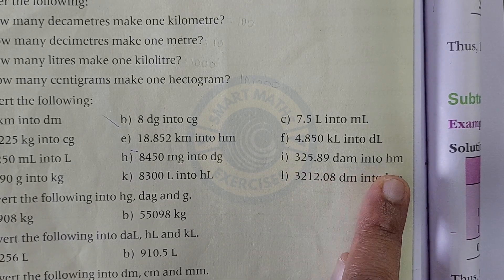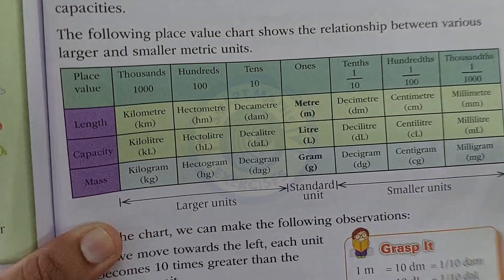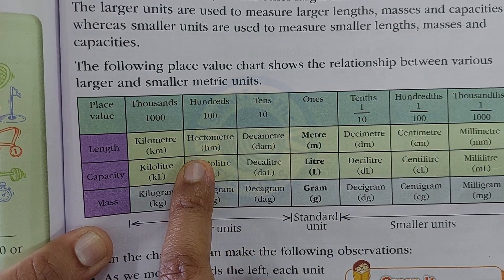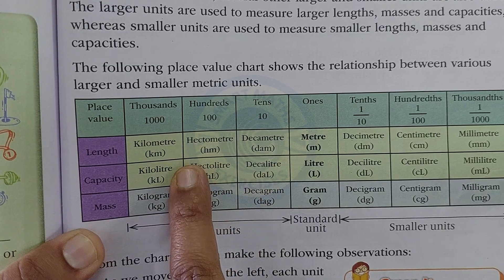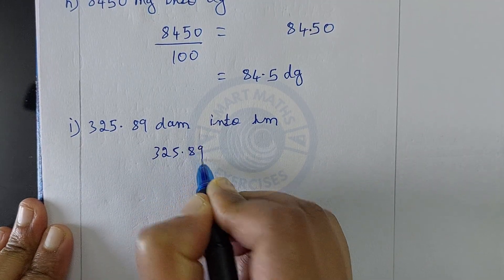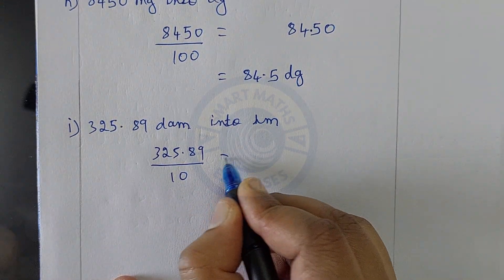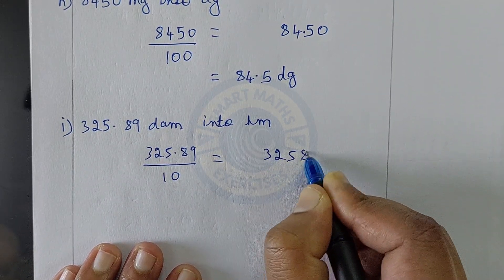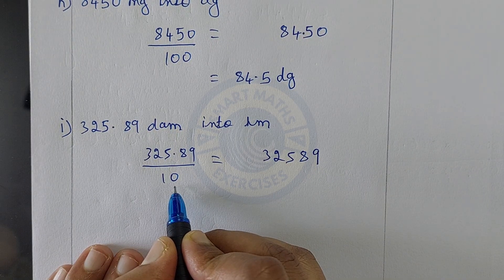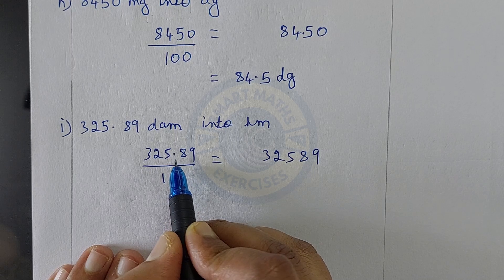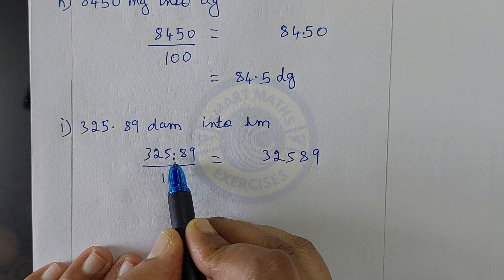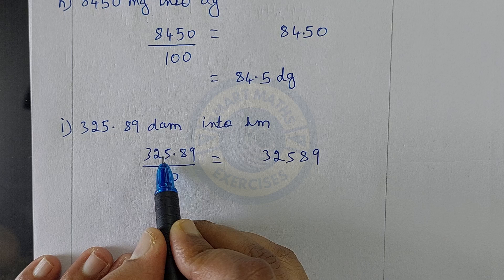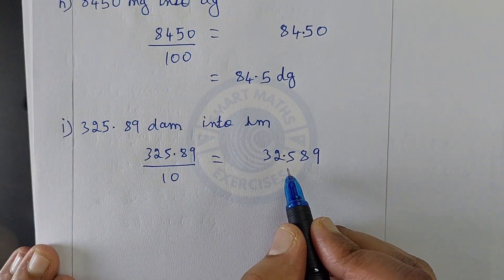Convert 325.89 decameters into hectometers. We are converting from decameter to hectometer. From decameter to hectometer, divide by 10. Divide 325.89 by 10. There is already a decimal point; shift it one digit to the left. The answer is 32.589 hectometers.